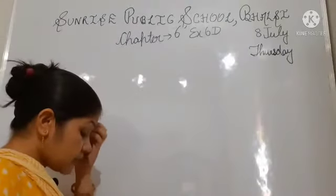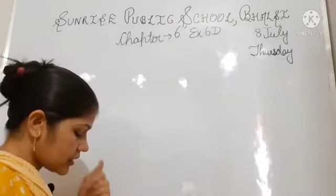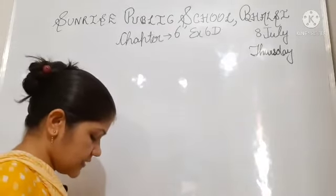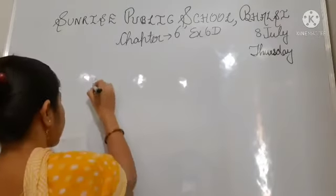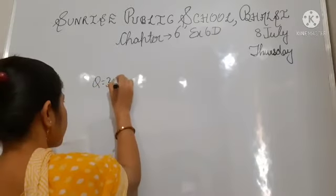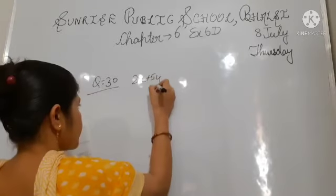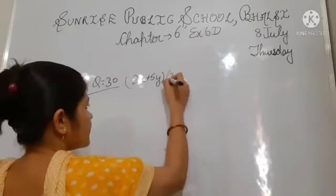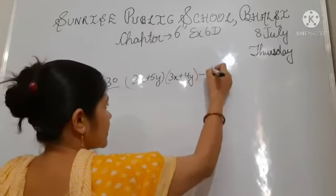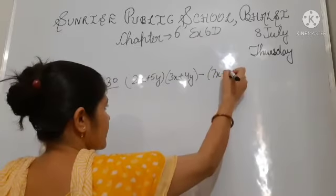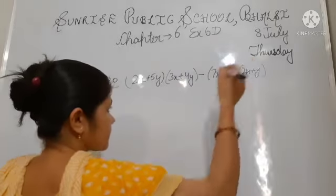Next, we have to simplify. Question numbers 27 to 31 require simplification. We will now solve question number 30. We are given: 2x plus 5y, multiplied by 3x plus 4y, minus 7x plus 3y, multiplied by 2x plus y.